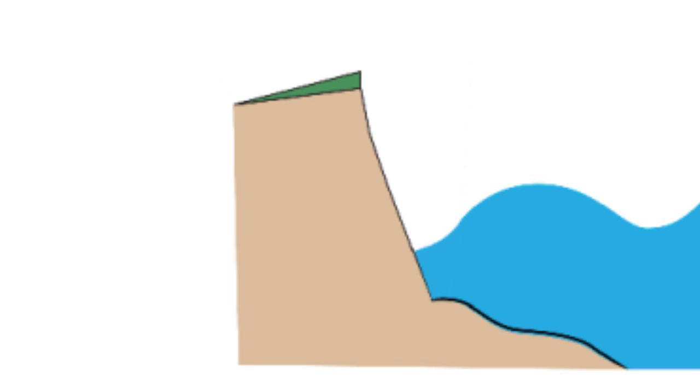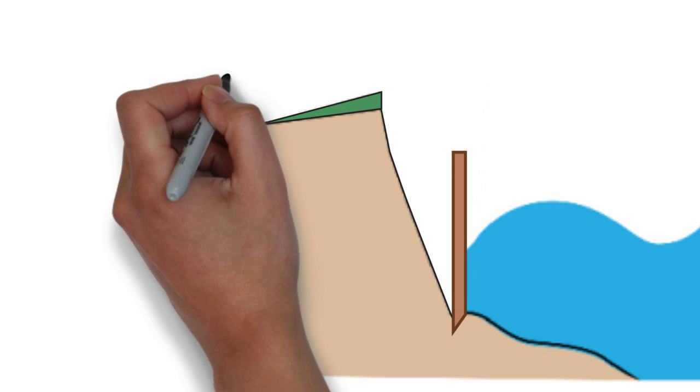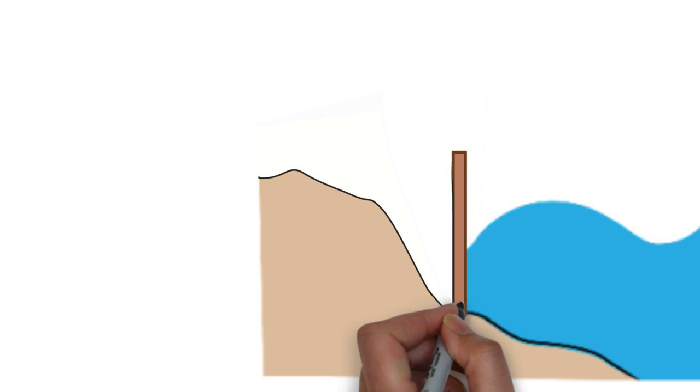Often when we protect one beach from short-term erosion, we take it and its bluffs out of the beach formation cycle. We keep that sand from building other beaches. And the beach we set out to protect, it can eventually erode too.